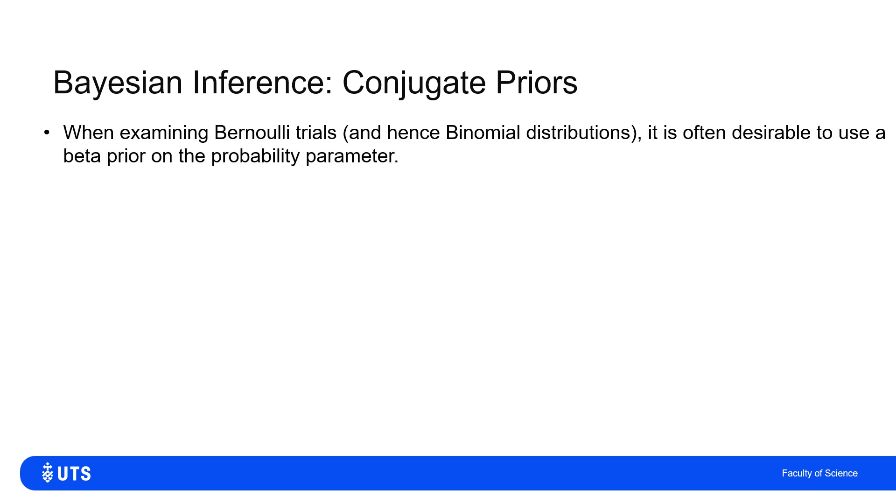This is a great distribution to use for describing things like Bernoulli trials—yes or nos. This also means it can be useful for things like a binomial distribution as well, where I have a large number of these Bernoulli trials.